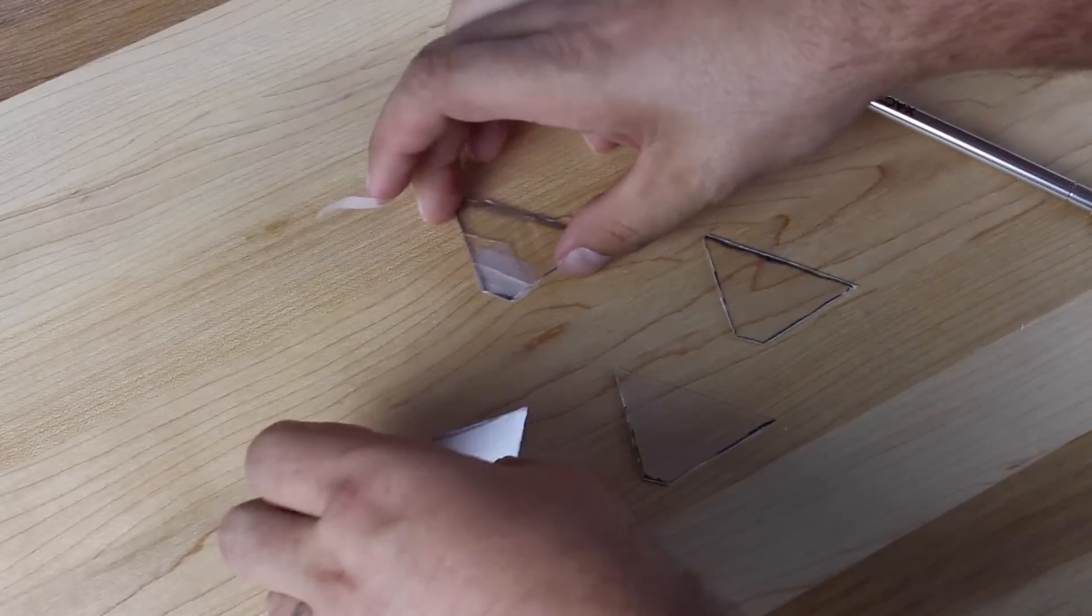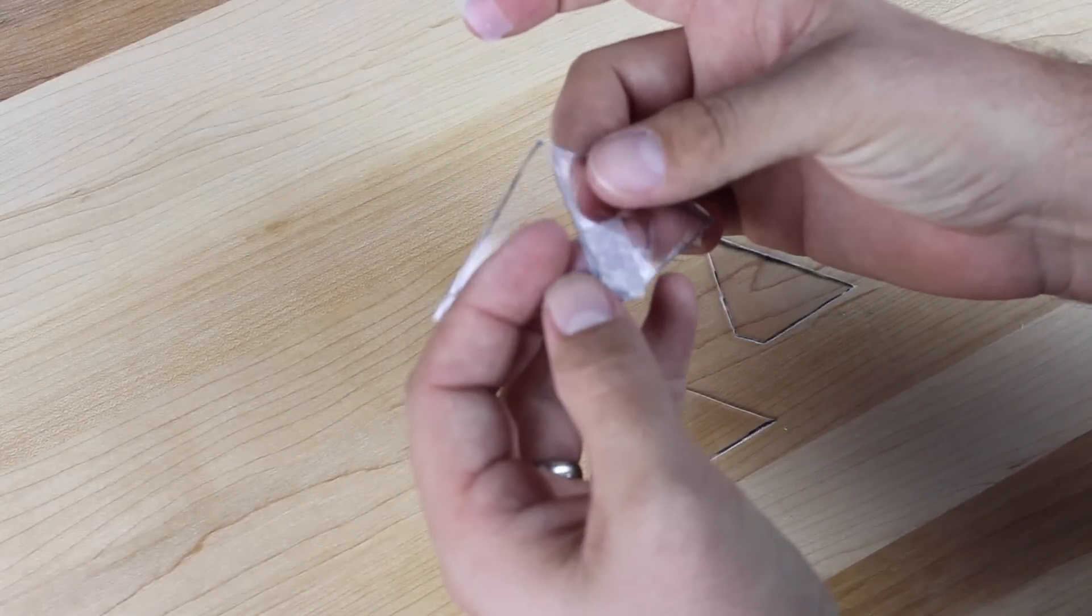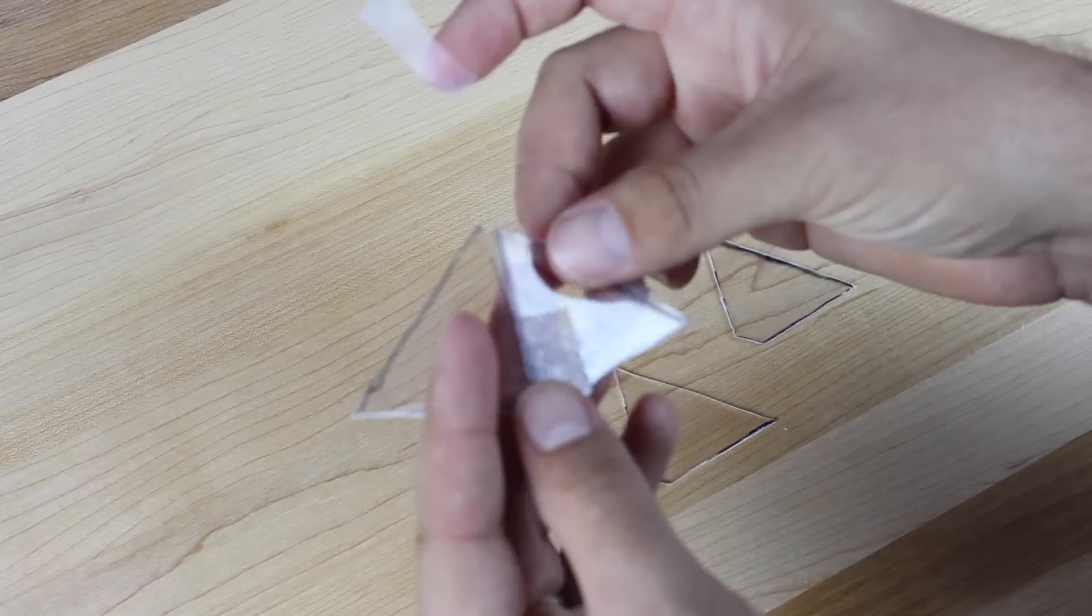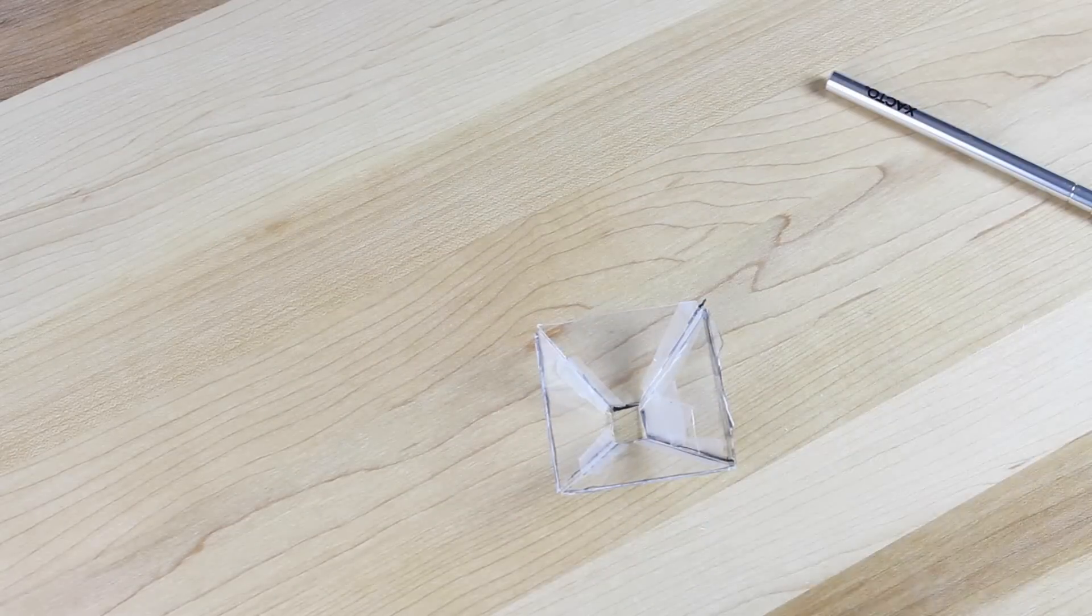Now once you have all four sides cut out, you're just going to take some clear masking tape. You can glue them together if you like, but I found that the clear masking tape really is the easiest way to go. You're going to tape each side together one by one, and when you're finished you'll have a nice little pyramid.